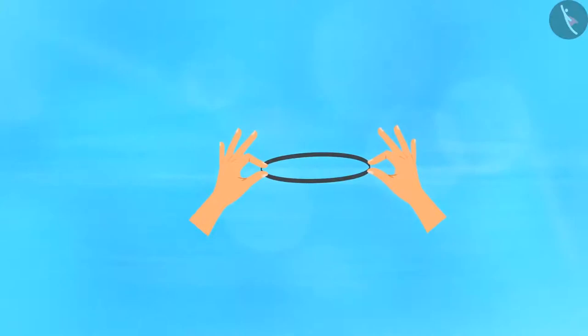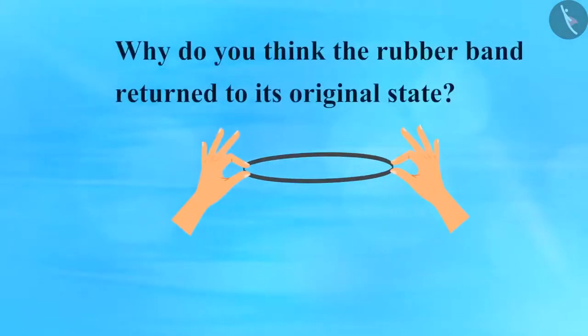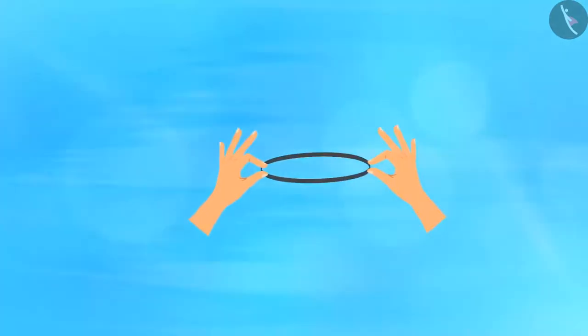Hold a rubber band in one hand and pull the band with the other hand. The rubber band will get stretched. Now, release the rubber band from one end and you will see that the band returns to its original state. Why do you think the rubber band returned to its original state? It is because the band acquired energy when it was stretched, and this energy causes the rubber band to return to its original state.